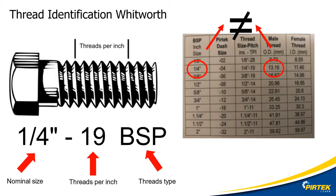Whitworth threads are identified by a nominal size, which does not relate to the actual size, and threads per inch. You'll need a thread chart and a method of measuring the TPI, such as a screw pitch gauge or rule.